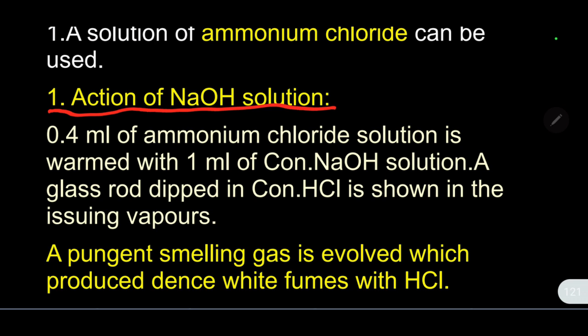When you treat sodium hydroxide with ammonium chloride, ammonium hydroxide and sodium chloride will form. A glass rod dipped in concentrated HCl is held in the issuing vapors. White vapors will be issued, and ammonium chloride will be formed on the glass rod.